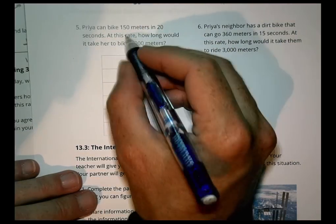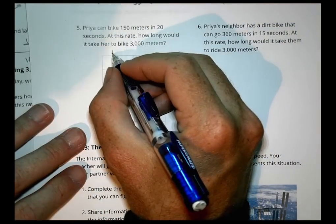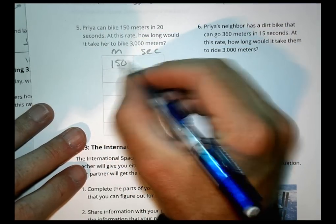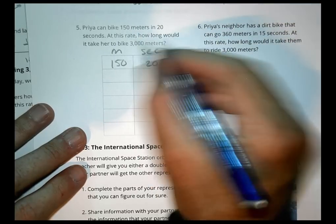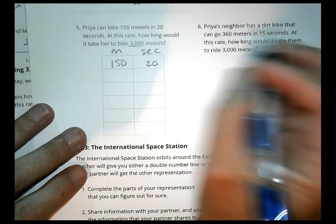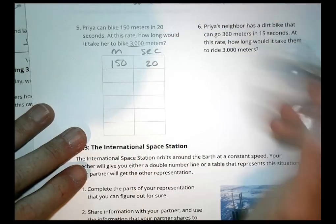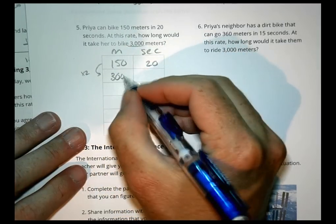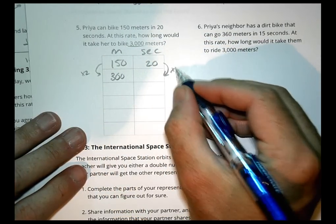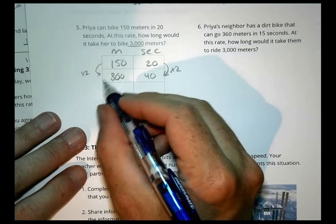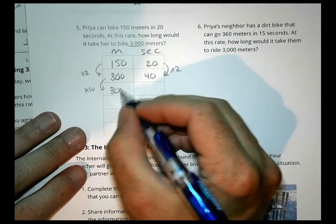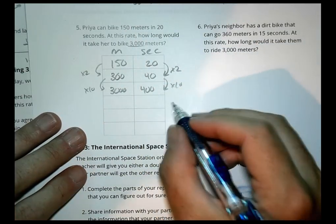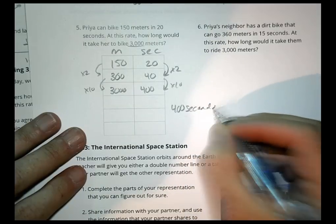Number 5 says Priya can bike 150 meters in 20 seconds. At this rate, how long would it take her to bike 3,000 meters? I know 150 times 2 can get me to 300, so 20 times 2 is 40. I like that because 300 times 10 can get me to 3,000, so 40 times 10 is 400. It would take her 400 seconds.